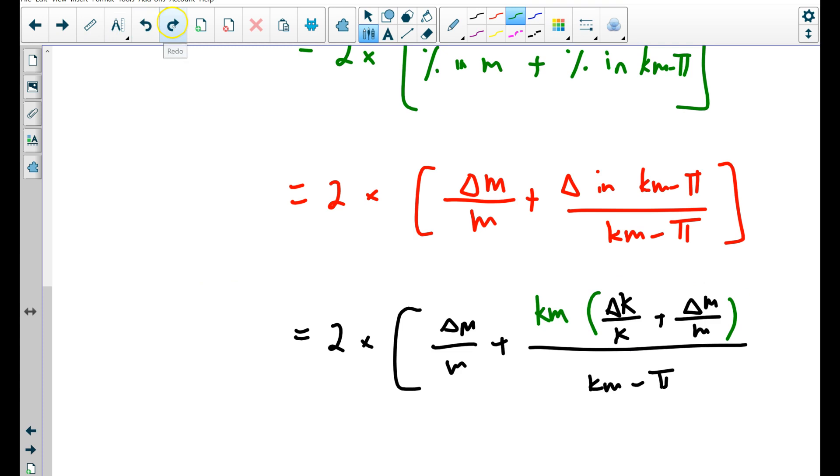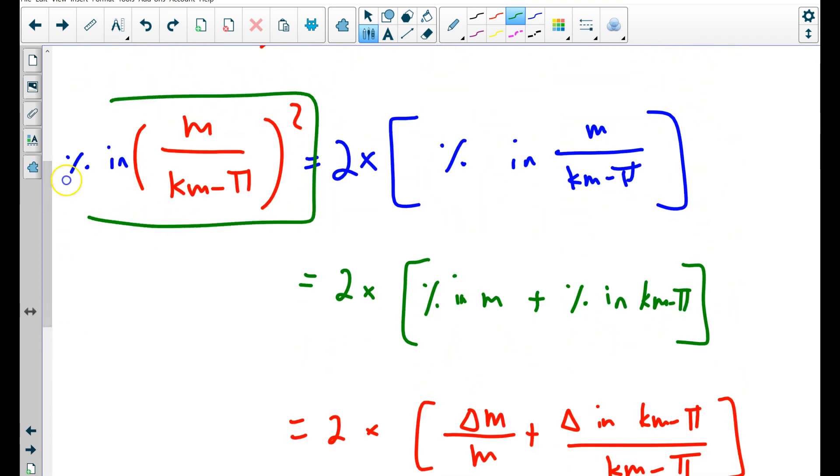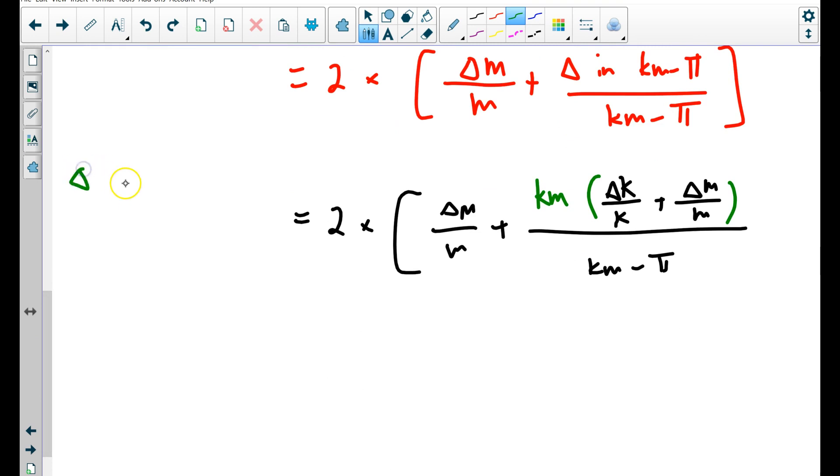And we're going through and we're applying these rules and we're doing it all and it's just like so much work. And is that it? Are we done? Well, the left side of the equation is the percent in this whole mess, but remember, every percent uncertainty is the absolute uncertainty in the mess. So what is it, m over km minus pi. Every percentage is the absolute uncertainty. I'm having issues with my touch screen. Let's move this down.